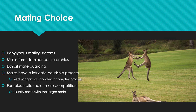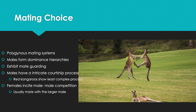The alpha male forms a dominance hierarchy and is seen to exhibit mate guarding — if another male approaches his female, he will not allow it. They have an intricate courtship process, though the red kangaroo shows the least complex process among kangaroo species. Females usually incite male competition, as males fight to be in charge and achieve breeding success.